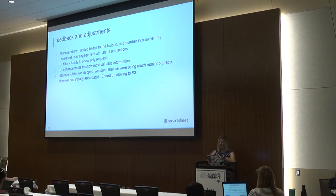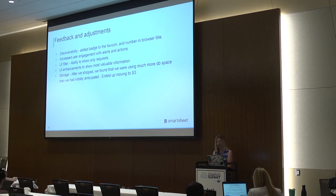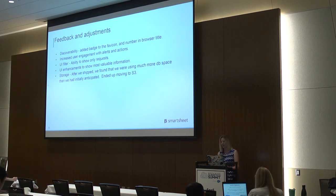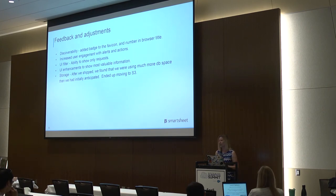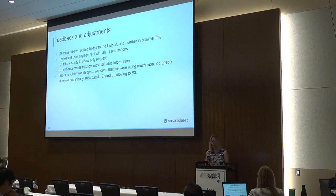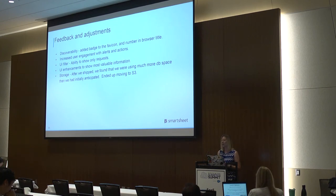Once we went live and nothing fell over — we got some feedback and made a few more adjustments. There wasn't as much user engagement with this feature as we would have liked initially, and we realized it wasn't as discoverable as we would have hoped. We added a badge to the browser tab to indicate unread notifications, and also added that number in the tab title. The automation system itself was still a pretty new feature when Notification Center first went live, so users weren't setting up enough notification rules. The lesson learned: automatically set up targeted notifications where appropriate, rather than relying on users to discover the feature and set it up themselves.